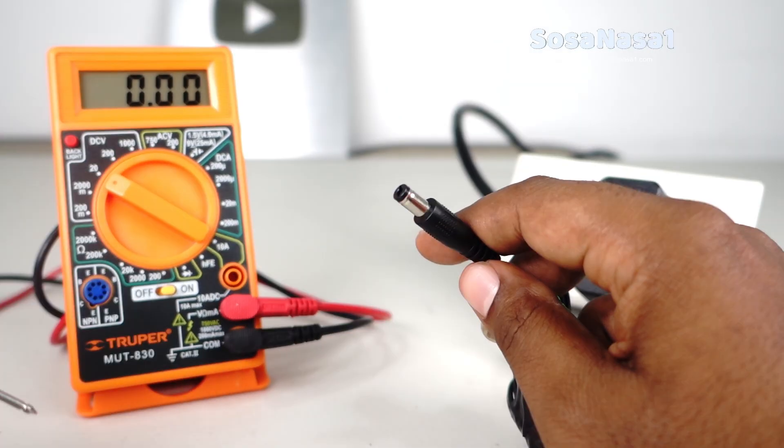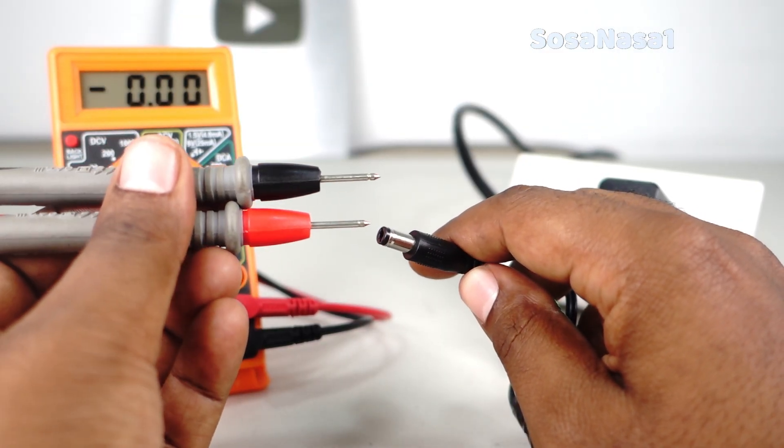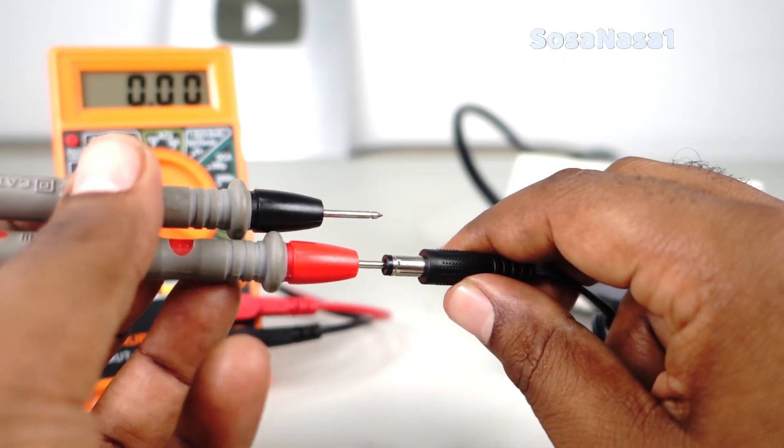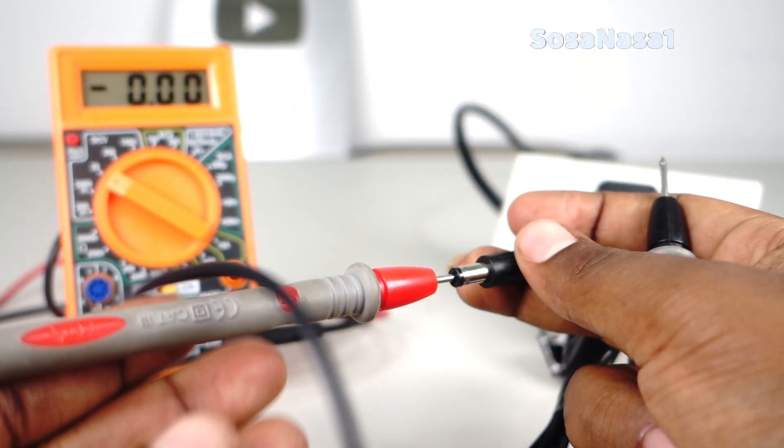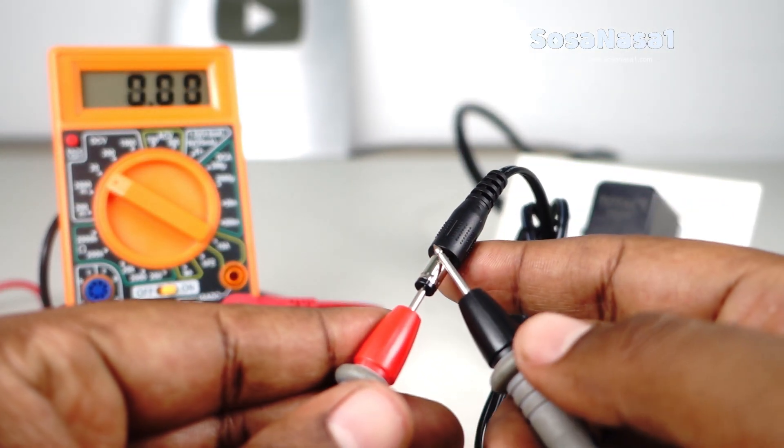Connect the digital multimeter tip to the charger in this way: the positive connect inside and the negative connect in this part.